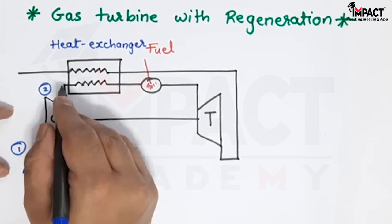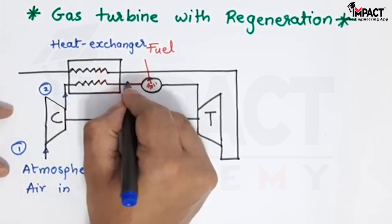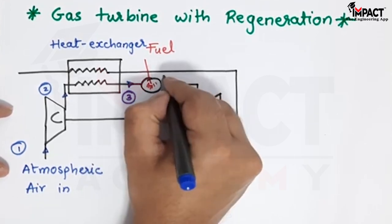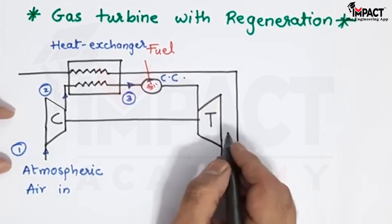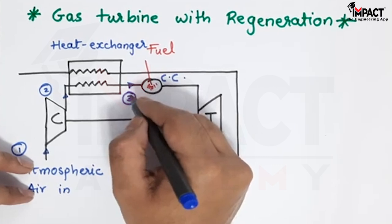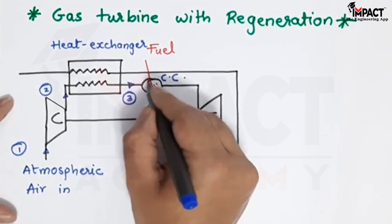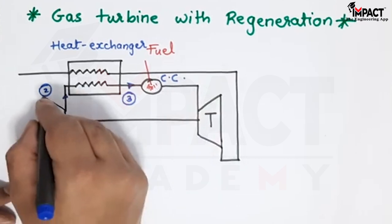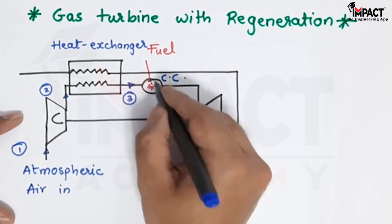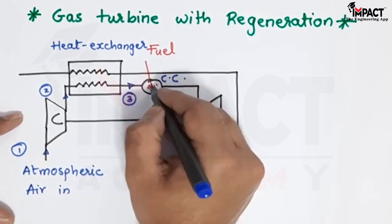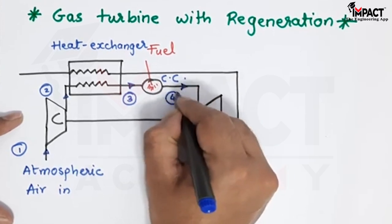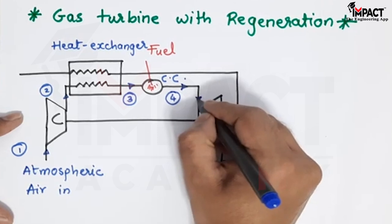The compressed air enters the heat exchanger at point 2, then it leaves the heat exchanger at point 3. After that it goes into the combustion chamber — I will denote it as CC. In the combustion chamber the fuel is sprayed, so the temperature increases further of the mixture — that is, of air and fuel. At point 2 we have air, at point 3 it is air, but the moment it mixes with fuel — this is a direct mixing type — at point 4 we are going to get gas after the combustion chamber.